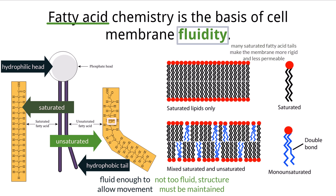Unsaturated fatty acids contain some carbon-to-carbon double bonds, and as a result have fewer hydrogen atoms, as each of the double-bonded carbon atoms only needs one hydrogen to complete their fourth bond. This unsaturated structure has a bent shape which takes up more space and does not allow the phospholipids to be packed together as tightly compared to the saturated form. This makes the membrane less rigid but more permeable.